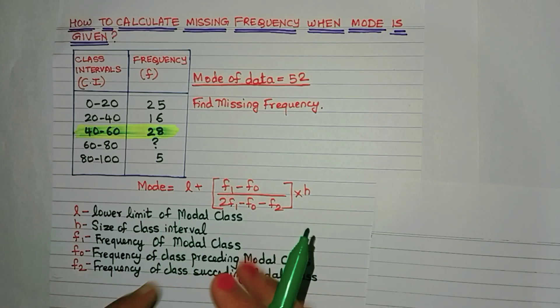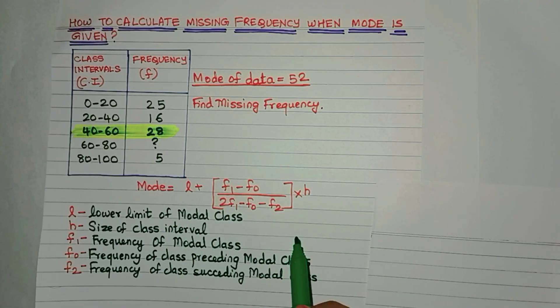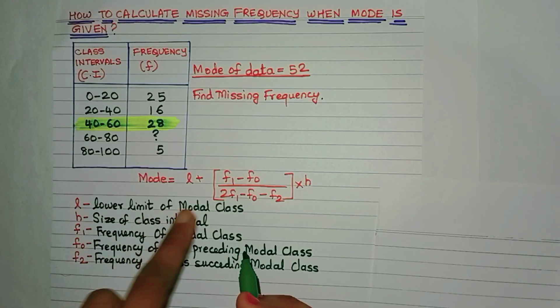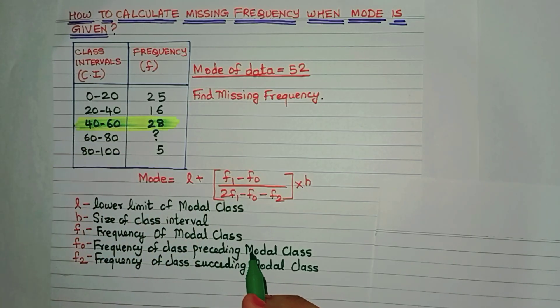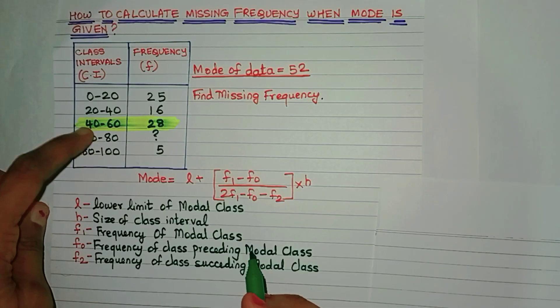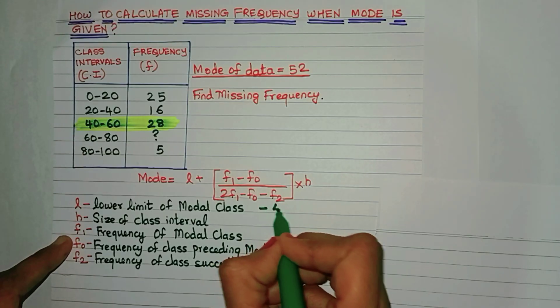Now that we know what is the modal class, it's very easy to find out all these values. Let's see what their values are. Now L is the lower limit of the modal class. So here is the modal class 40 to 60. So what is the lower limit? Yes, definitely it's 40.